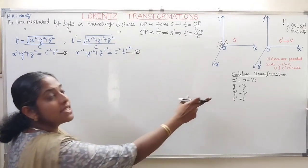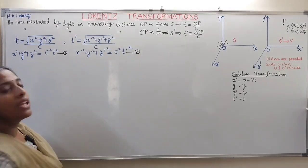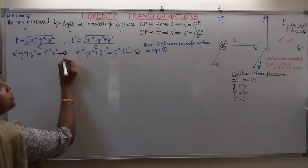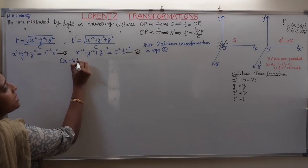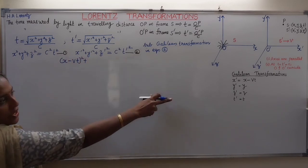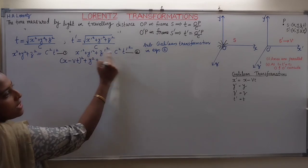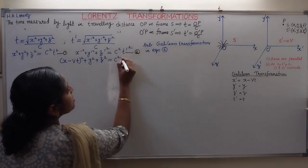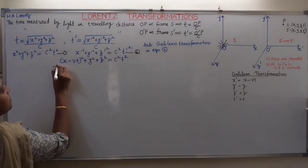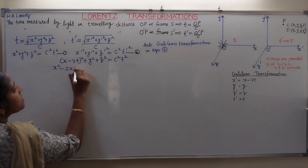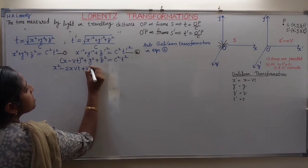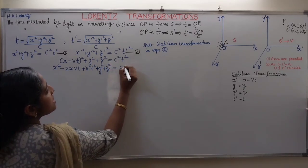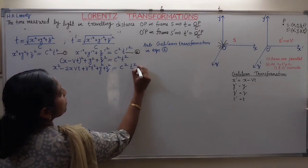Now we substitute the Galilean transformation equations into equation 2. Substituting x' = x − vt, y' = y, z' = z, and t' = t, we get: (x − vt)² + y² + z² = c²t². Expanding this gives: x² − 2xvt + v²t² + y² + z² = c²t². This is equation number 3.